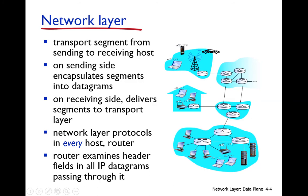The network layer computes the best route from source to destination. Once the best route is determined, the data is moved along that path — from source machine to the first router, then from first router to the second, and so on. This movement is called forwarding. So the network layer has two main functions: routing and forwarding.